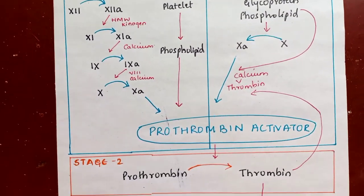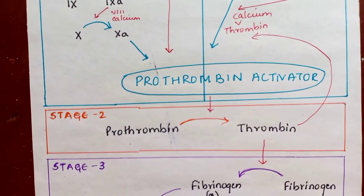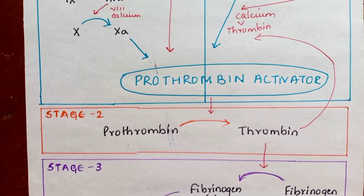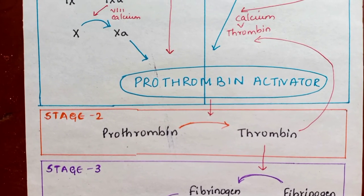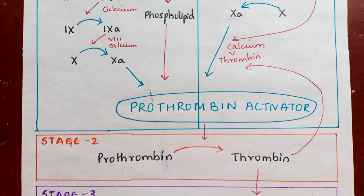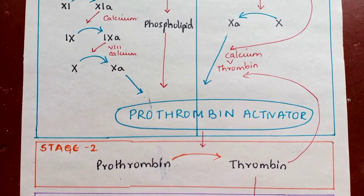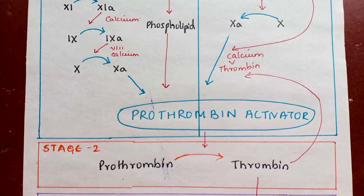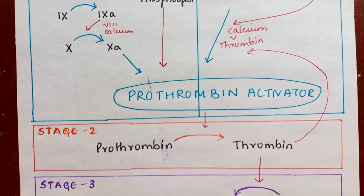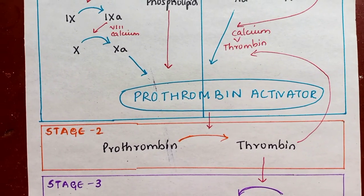In Stage 2, formation of thrombin: prothrombin is converted into thrombin by prothrombin activator in the presence of calcium.